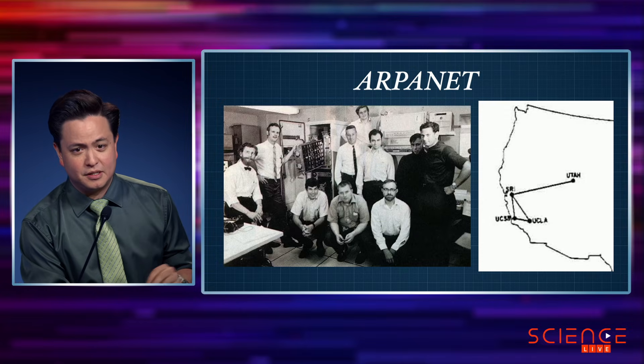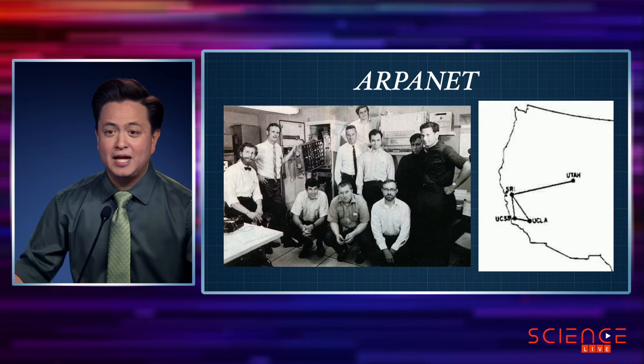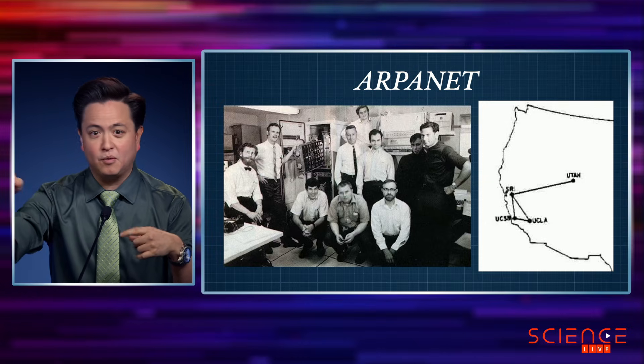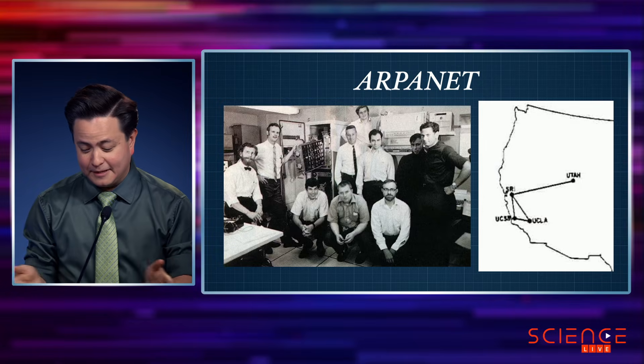ARPANET was going to be a connection of computers at different locations, most of them at universities. The idea was: if we have information, we can share it from this computer to that one — peer to peer. When they finally got it ready in 1969, they did their first communication test. They sent a message that said 'log in,' but it corrupted, and on the other side they just got 'L-O.'